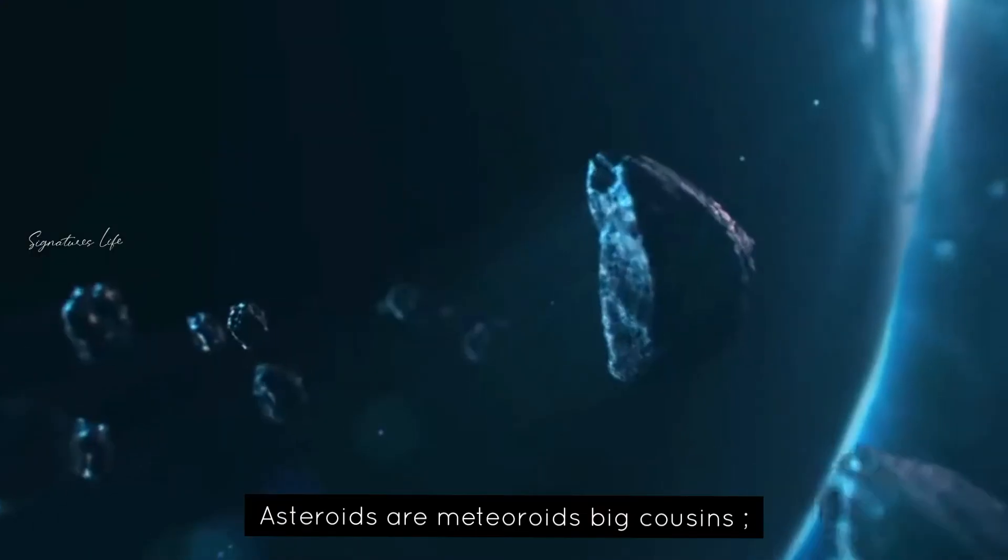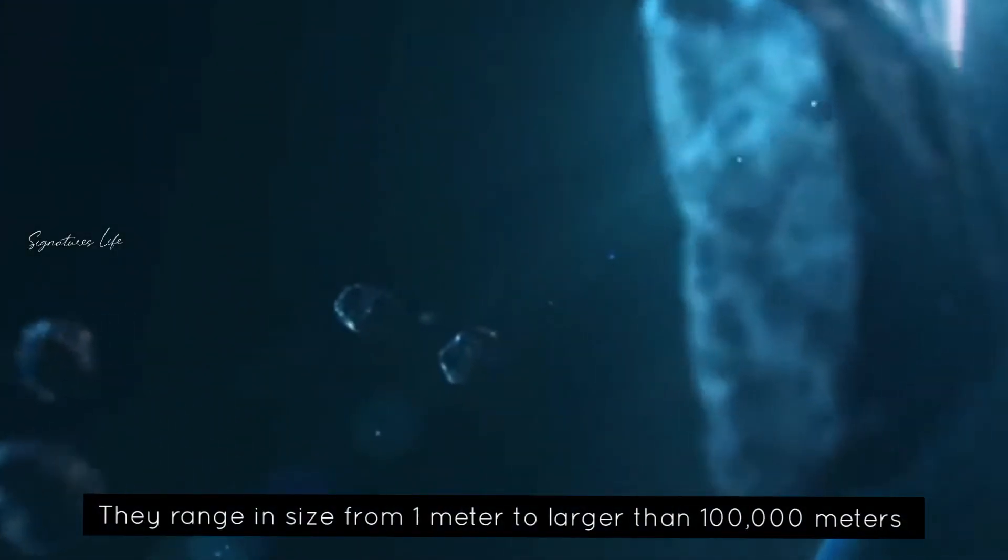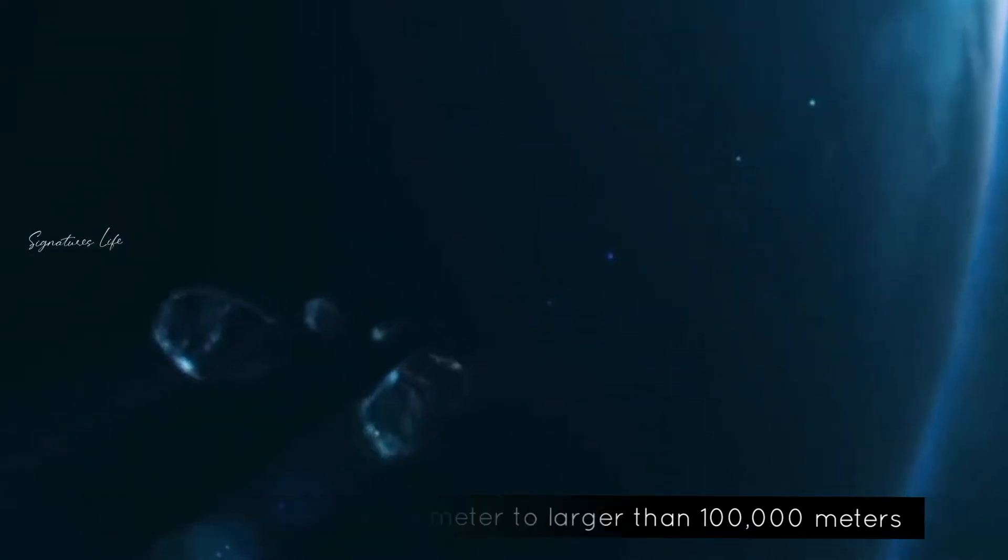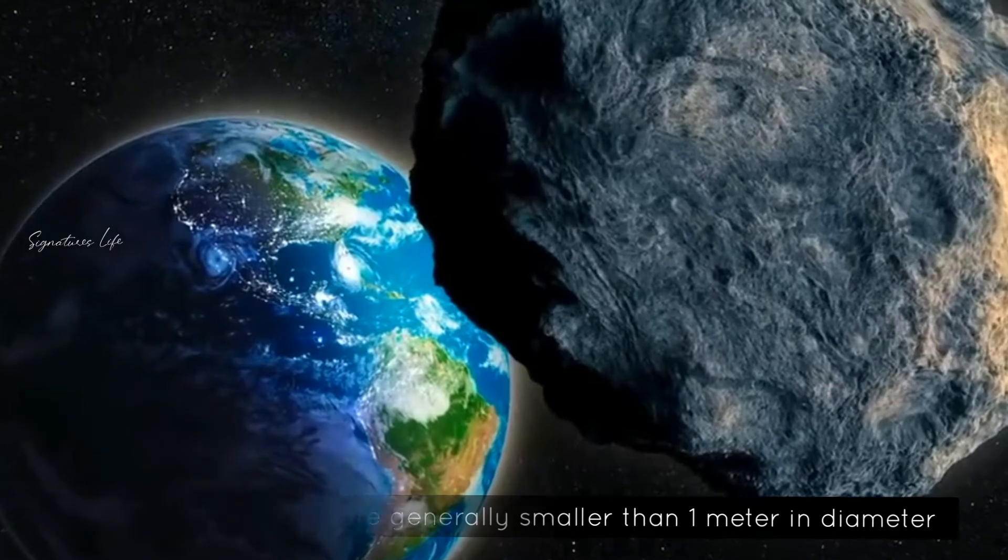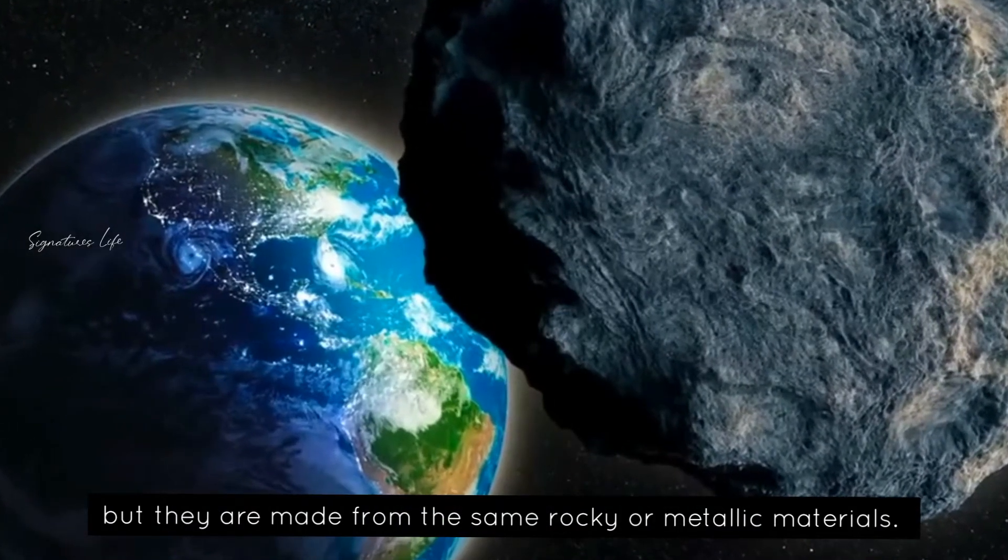Asteroids are meteoroids' big cousins. They range in size from one meter to larger than 100,000 meters, whereas meteoroids are generally smaller than one meter in diameter but they are made from the same rocky or metallic materials.